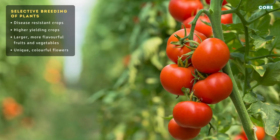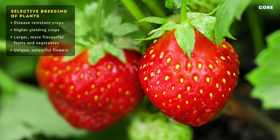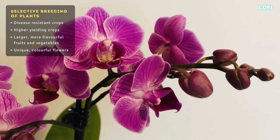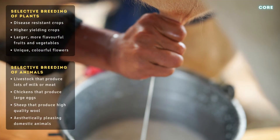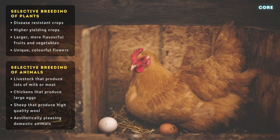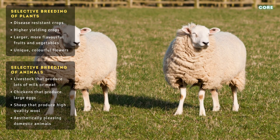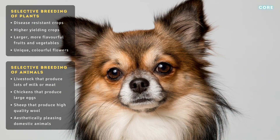Through selective breeding, humans have been able to produce disease-resistant crop plants, increase crop yield, enhance the flavor and size of fruits and vegetables, and alter the color and appearance of flowers. Artificial selection has also given rise to cows that produce lots of milk, pigs that produce lots of meat, chickens that lay large eggs, sheep with high quality wool, and aesthetically pleasing dogs and house cats.